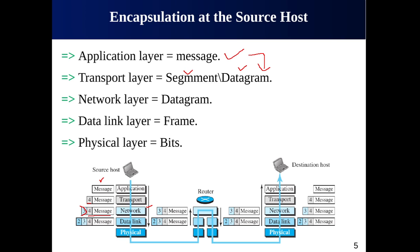The network layer header also contains extra information for error checking of the header, fragmentation information, and so on. The result is the network layer packet, which is referred to as a datagram. The network layer then passes this datagram to the next layer, the data link layer.